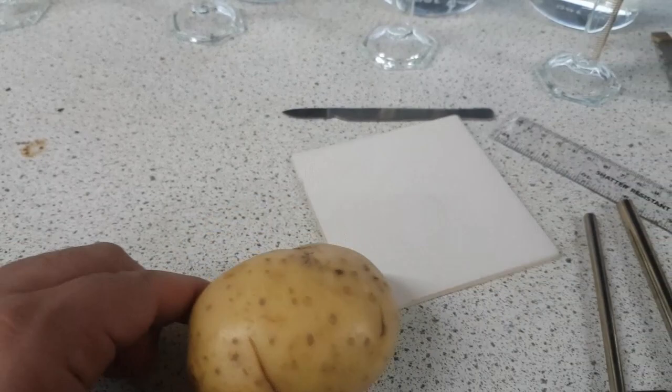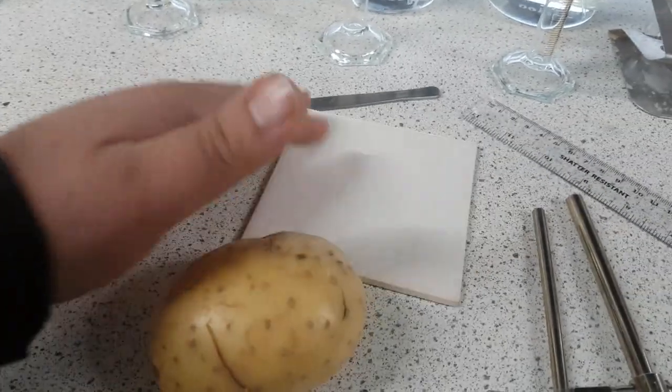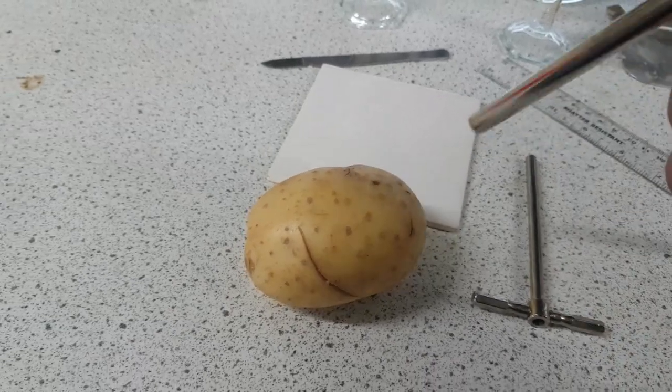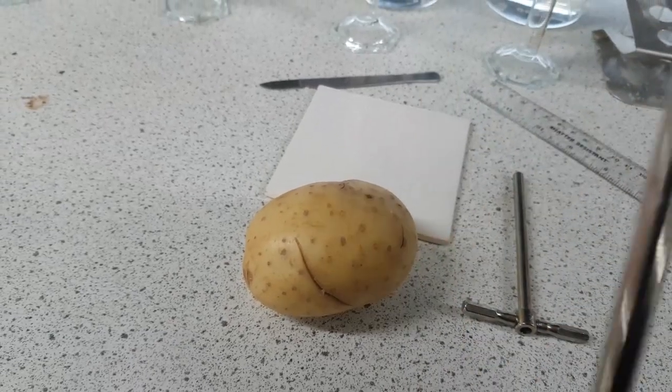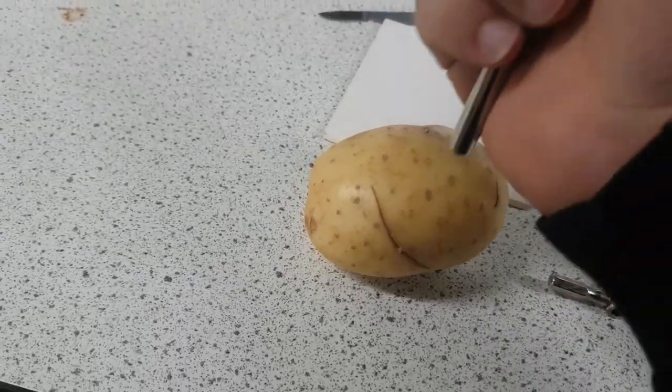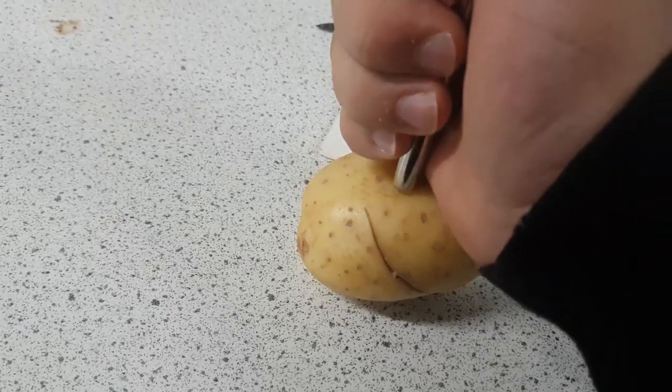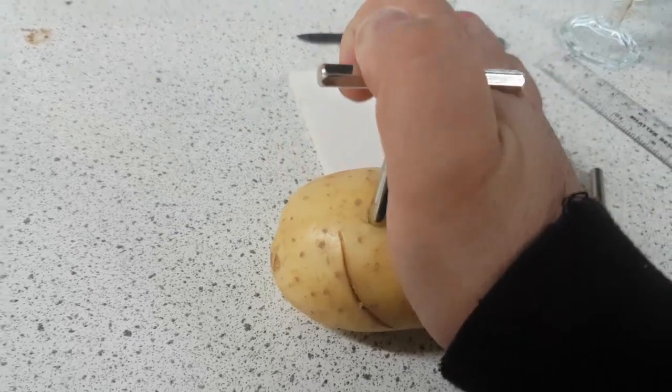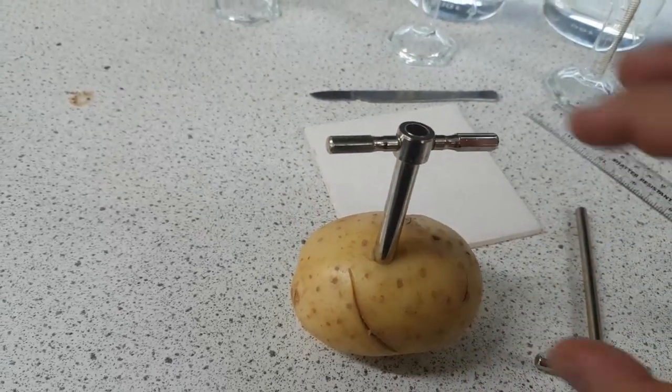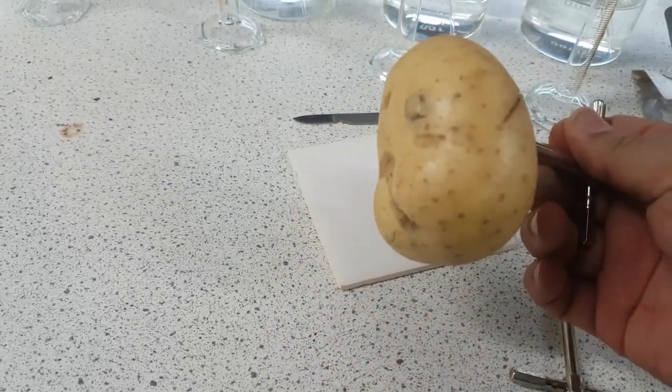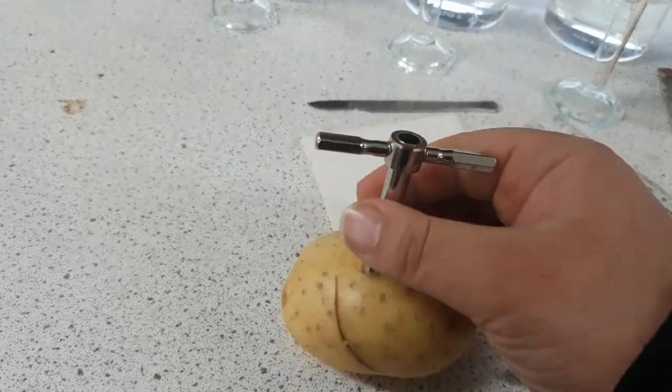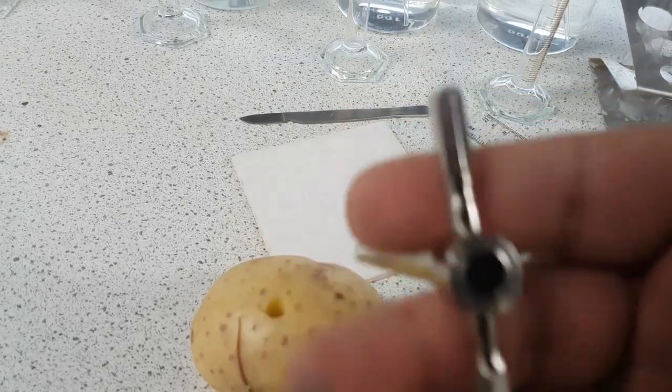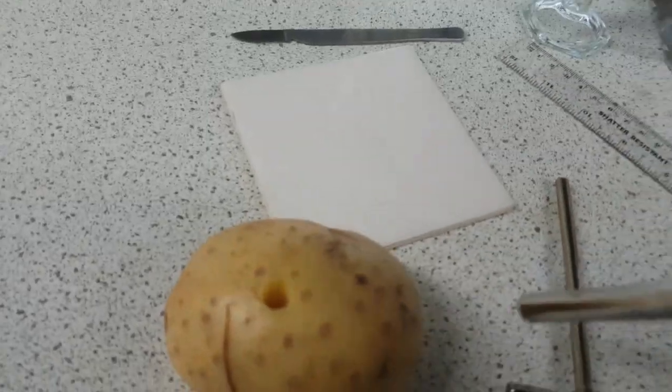So you're probably wondering what do we do with the potato. Well it's quite simple. What we do is we take the potato and we take the cork borer and we are going to press a hole into it. You've got to hold the potato firmly so that you don't end up slipping and injuring yourself. Once you've done that, you can take your cork borer out, and as you can see it's a holy potato now.